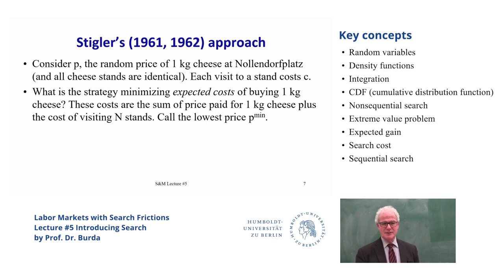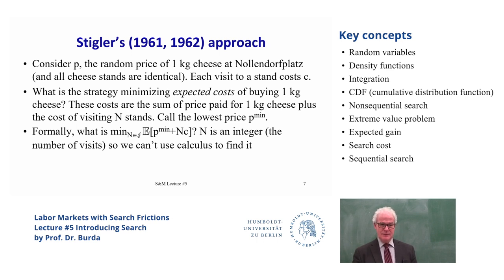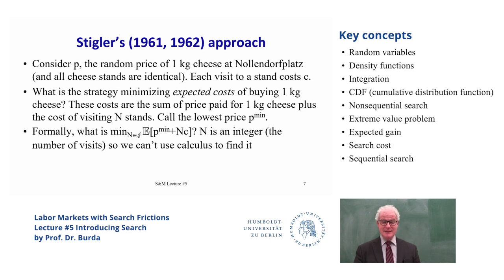It's a bit more complicated than just taking the expected value. You want to take the expected value of the random variable which is the lowest price of the N stands that you visit — so it's an extreme value problem. Formally, you're choosing N, the integer number of visits. N implies a value for this minimal price, and you can take an expectation of that price. If you choose to visit N stands, you'll also have to pay N·c in shoe leather costs. Because this is an integer problem, we can't use calculus — it works better to think in terms of integers.